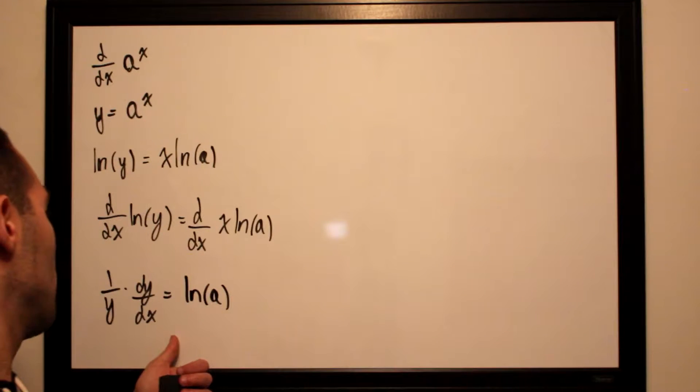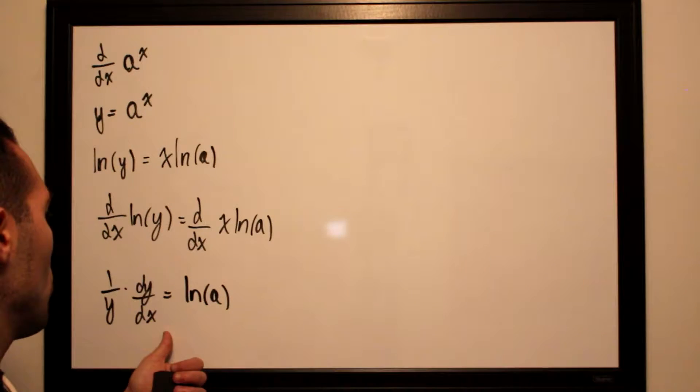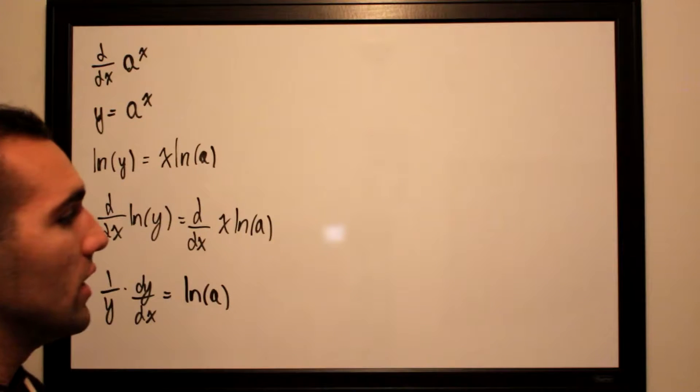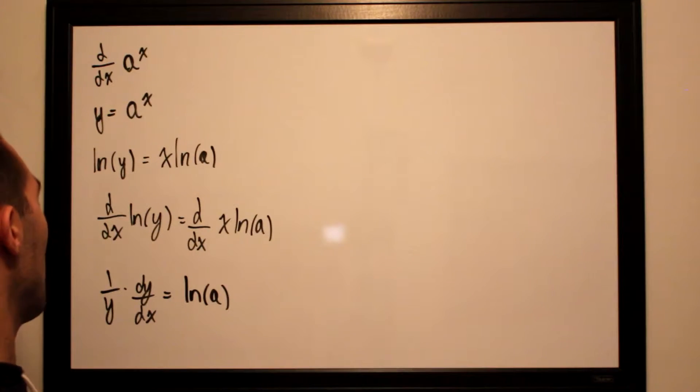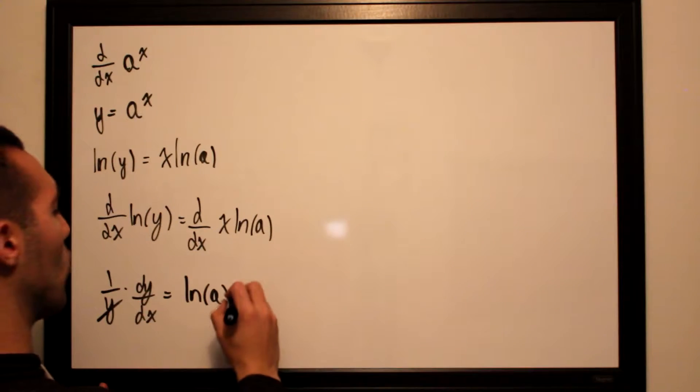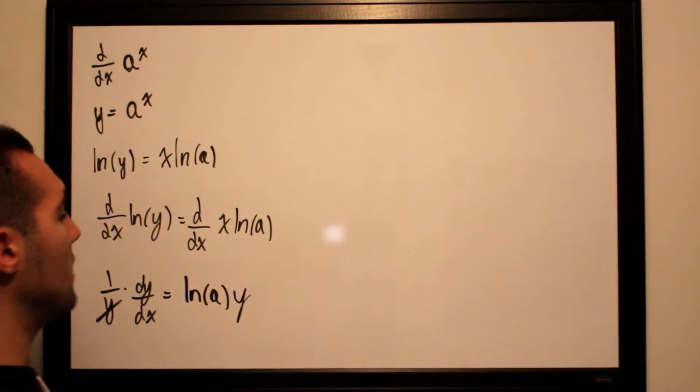Now we want to isolate dy/dx. So we multiply both sides by y. If we multiply both sides by y, all we would have is a y on this side and dy/dx on this side.